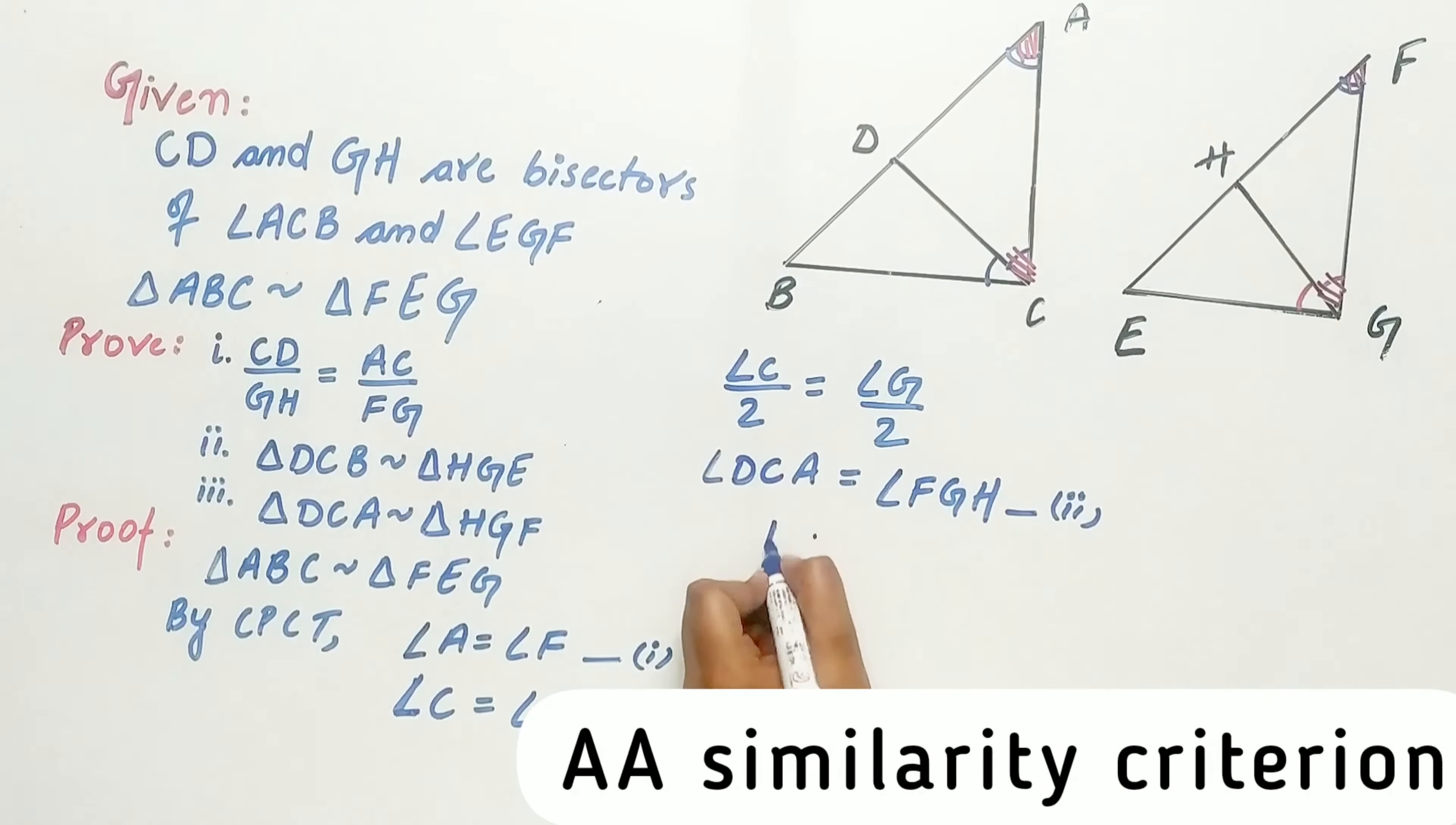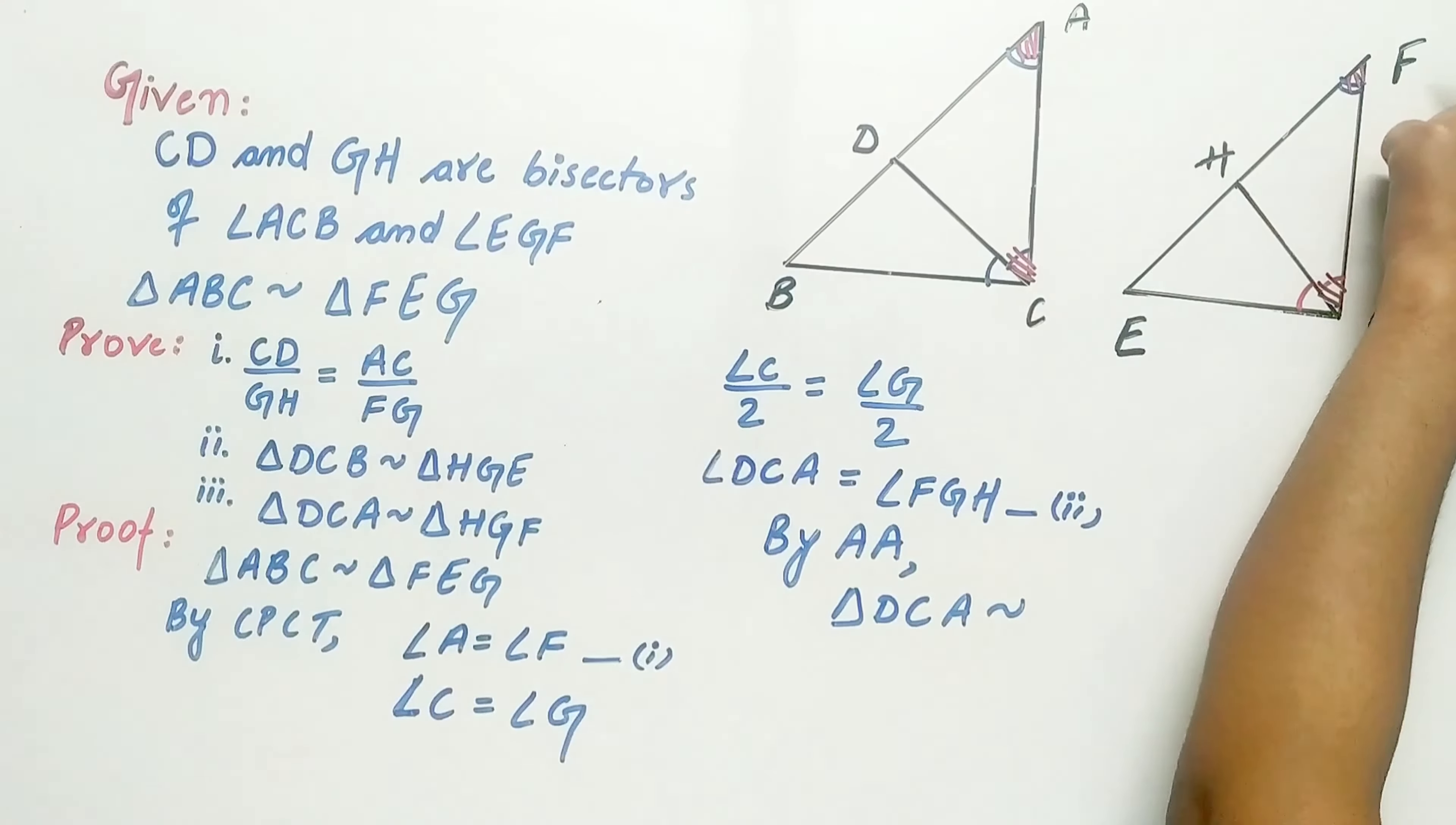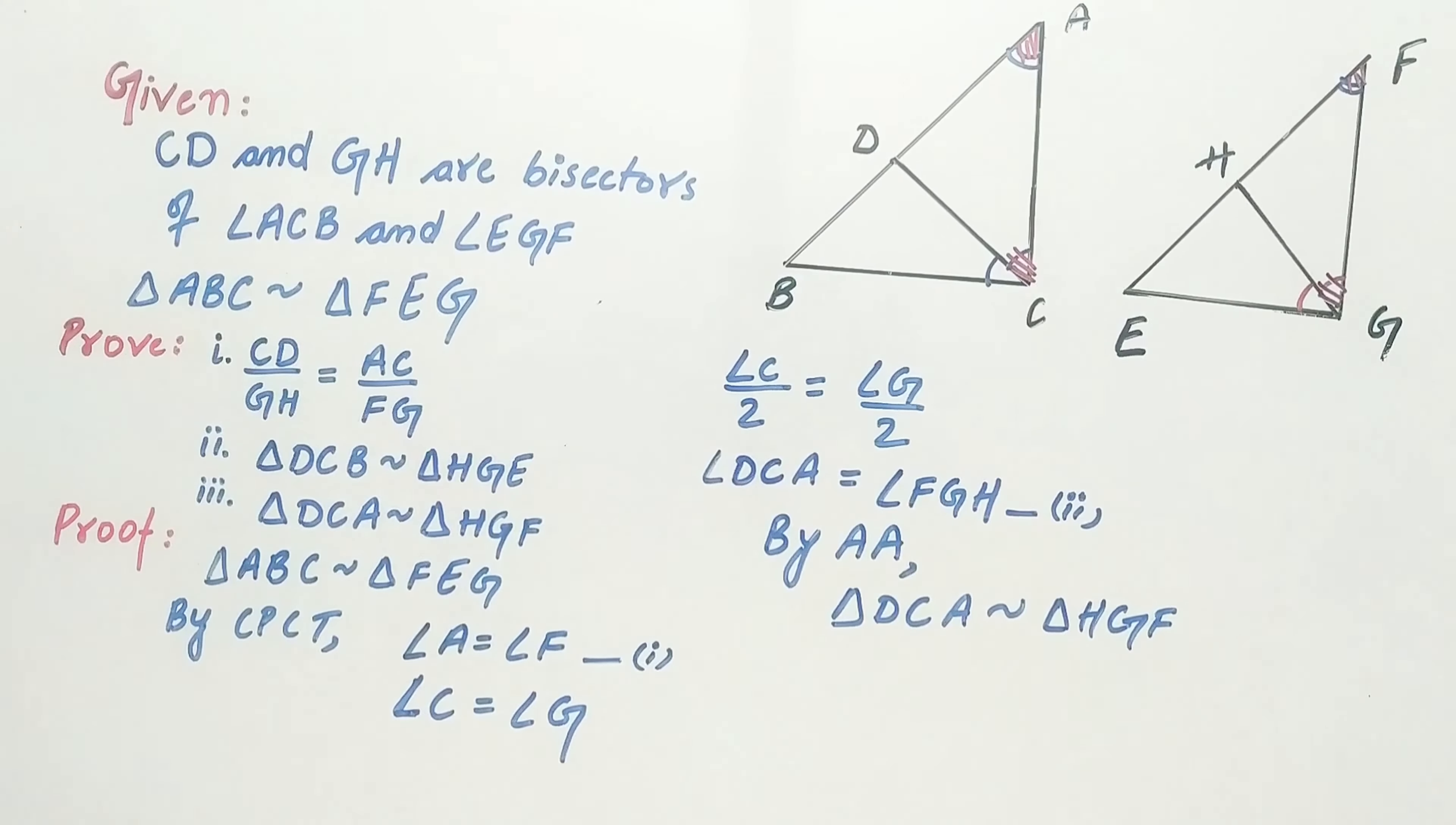By AA, triangle DCA is similar to triangle HGF. That proves our third part.